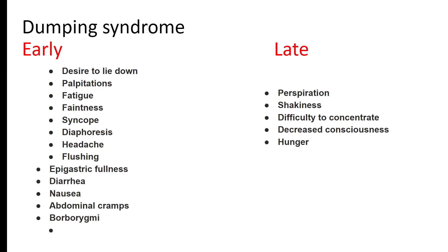In gastroparesis there is a reduction of peristaltic movement, whereas in dumping syndrome there is an abnormality of the absorption mechanism. Dumping syndrome was initially considered a complication of gastric surgery, but now we know that plenty of patients have dumping syndrome-like symptoms even without gastric surgeries. Earlier, gastrectomy or gastroduodenostomy surgeries would result in dumping syndrome if the anastomosis was not proper or the proximal loop became bigger.